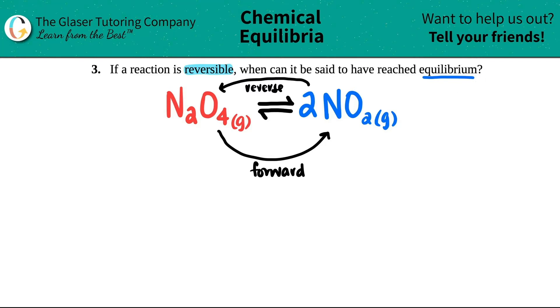Well, good question. Basically, when something equals equilibrium, or when a reaction reaches equilibrium, the forward reaction has to basically equal...